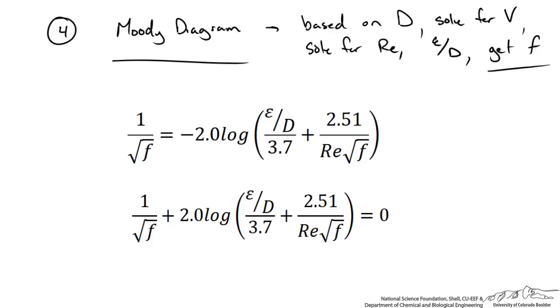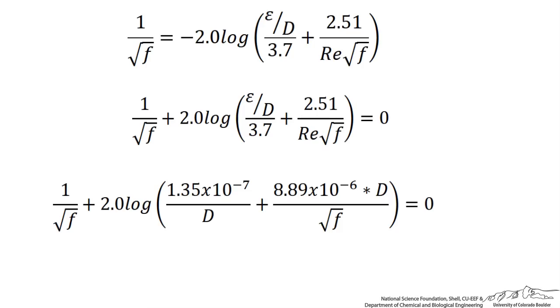Now if we simplify this so it's only a function of the diameter d and the friction factor f using values we already had before, we could get rid of epsilon and the Reynolds number. So now we have a relationship between f and d based on the Colebrook equation.